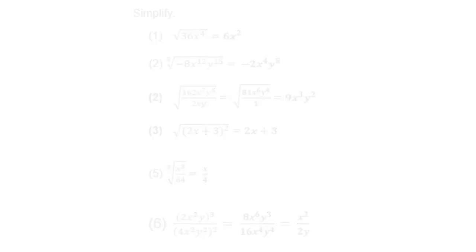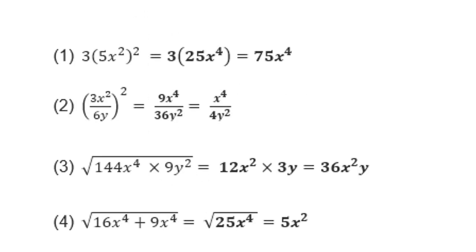For 3 times (5x squared) to the power 2, remember the 3 must remain outside. Don't forget: 5 squared is 25, so you get 25x to the power 4, and then only do you say 3 times 25 to give you 75x to the power 4.